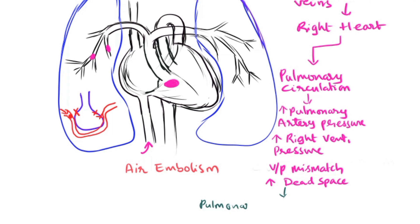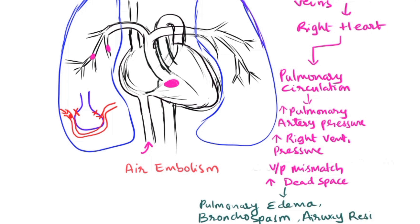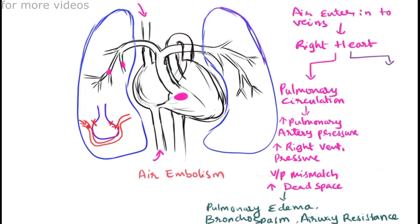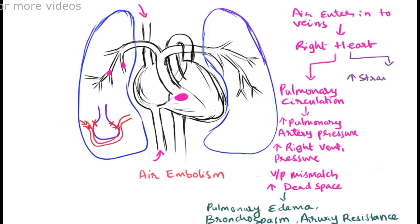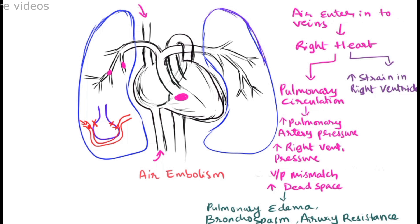This pulmonary circulatory blockage may lead to pulmonary edema, bronchospasm, or bronchoconstriction, and eventually increased airway resistance. These are the signs and symptoms of pulmonary circulatory blockage in air embolism. Additionally, there is increased strain on the right ventricle due to the trapped air, either in the ventricle or in the pulmonary circulation, which eventually leads to decreased cardiac output and right ventricular ischemia.